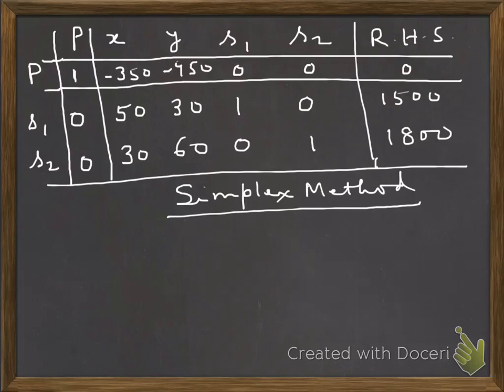So since Y is having most negative coefficient, that is minus 450, so this becomes the entering variable. Now, when any variable enters into the basis, some variable will be leaving the basis. So either S1 or S2 will be leaving the basis. Which one will leave?